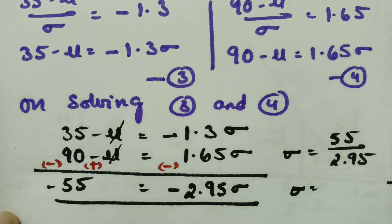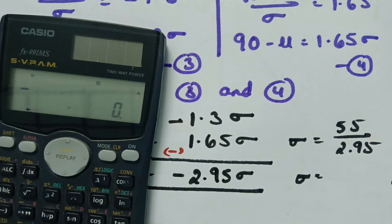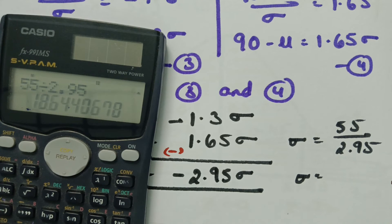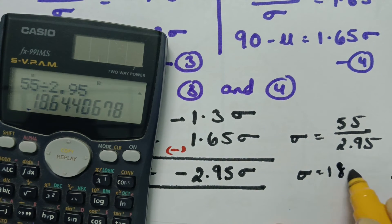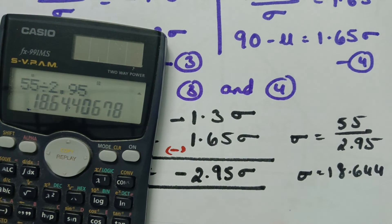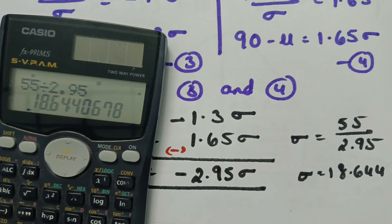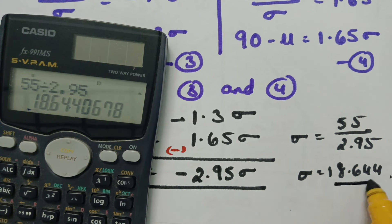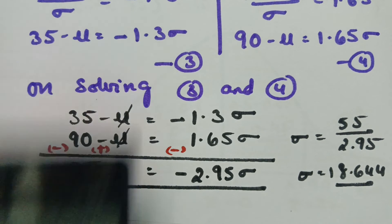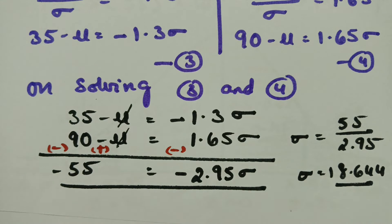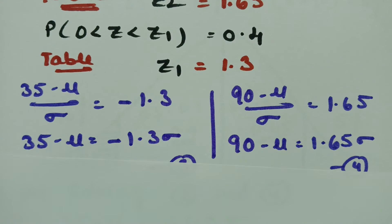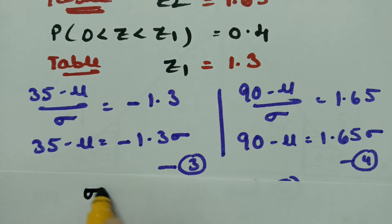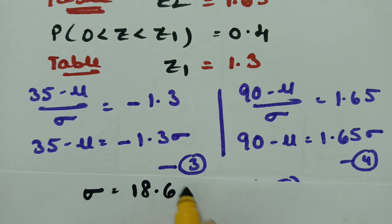After cancelling the negative sign, sigma equals 55 divided by 2.95. The value is 18.644. So sigma equals 18.644.